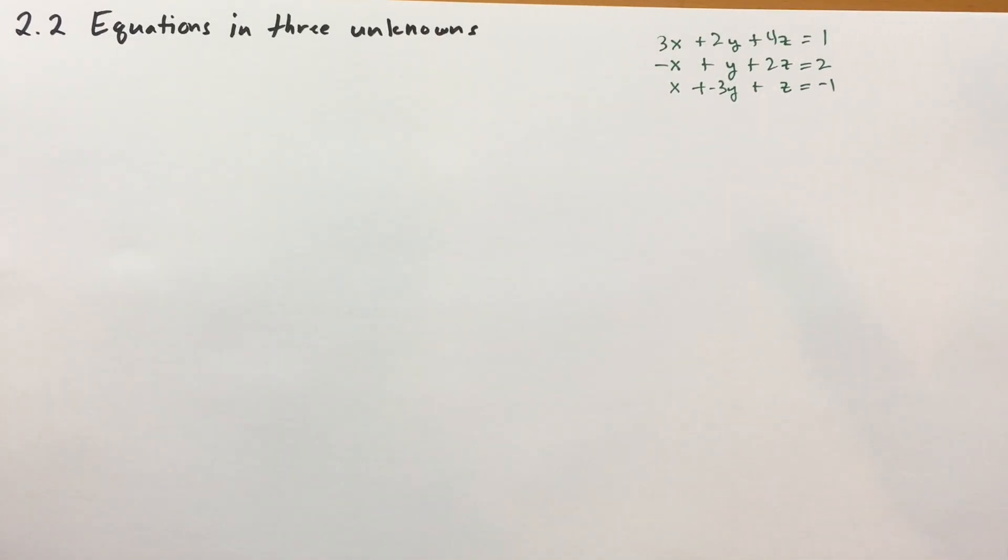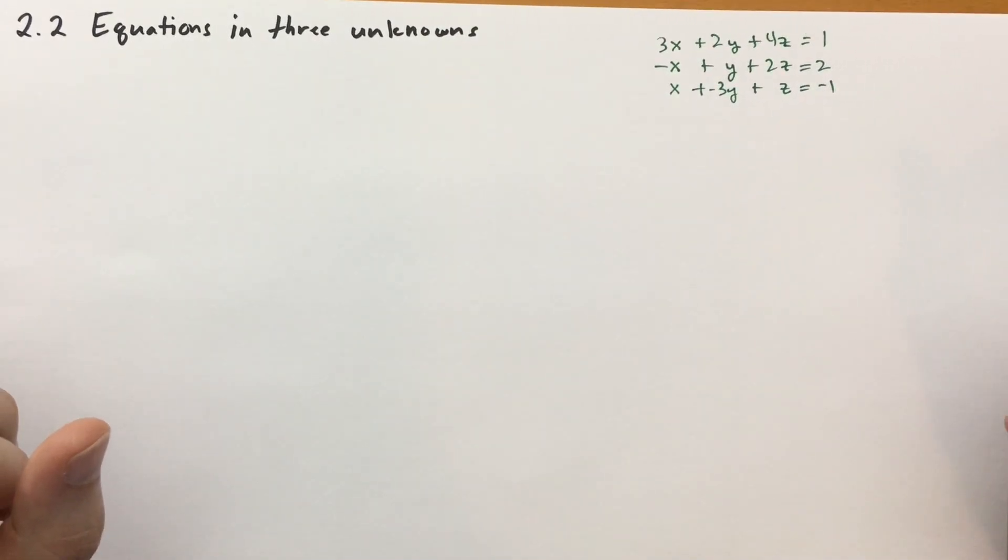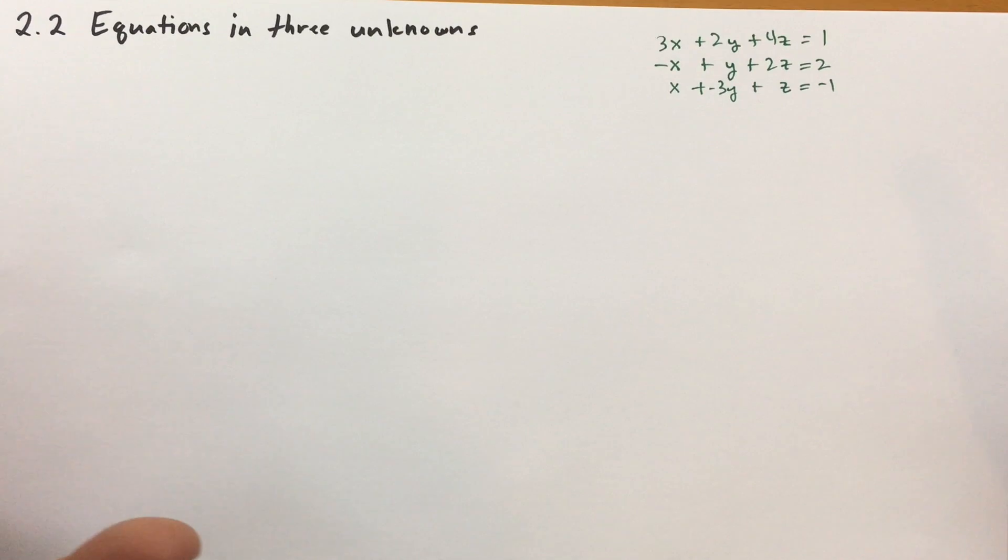The pattern's the same. We're just going to try to eliminate one of these variables. And we'll get an equation with two variables and two unknowns. And then we'll have to get another equation with two variables and two unknowns. So we'll have to eliminate one of the variables twice using different equations. Okay, let's just go through it. It's pretty straightforward.